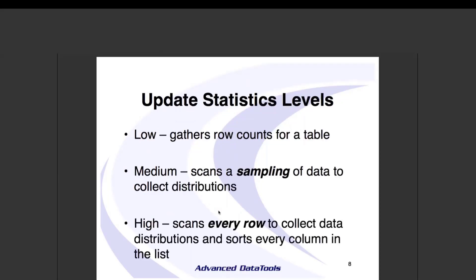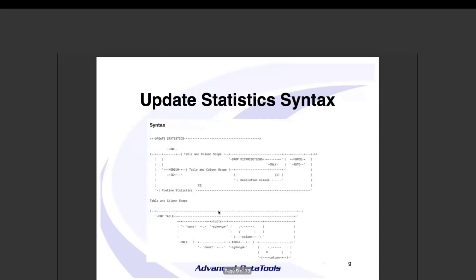There are three levels of update stats: low, medium, and high. Low is very quick — it gets a row count for every table. Medium, in addition to getting the row count, gets a sampling of data — typically less than 3,000 rows — and creates distribution bins. High scans every row and sorts every column you specify. If you have five columns listed for high, it does five sorts. All of this gives the SQL optimizer really good information on how to run queries.